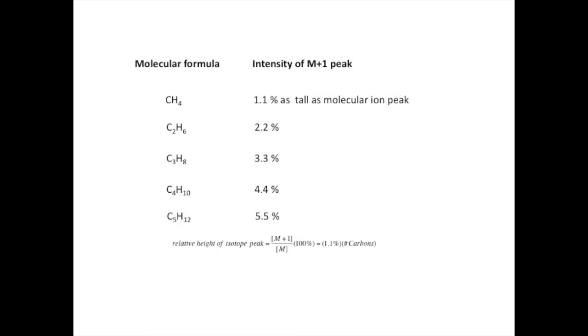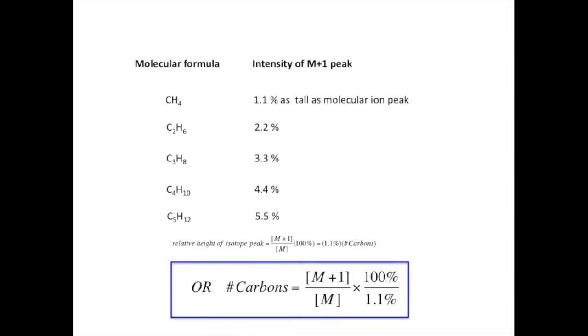We can say, then, that the relative intensity of the M plus 1 peak compared to the molecular ion intensity times 100% is equal to 1.1% times the number of carbon atoms. Or, said another way, the number of carbon atoms can be calculated from this ratio times 100% divided by 1.1%.